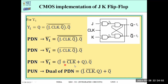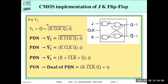So for y1 we now have the PDN and PUN. Similarly, for y2: the PDN is obtained by complementing y2. The complement gives: K̄ + clock̄ + Q̄ · Q. Further simplified: (K̄ + clock̄ + Q̄) · Q. This is the pull-down network. The dual of this PDN gives the PUN: K̄ · clock̄ · Q̄ + Q.